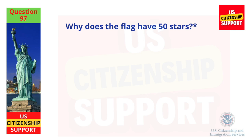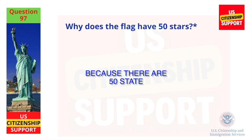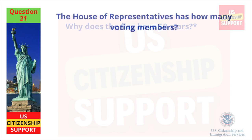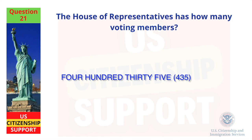Why does the flag have 50 stars? Because there are 50 states. The House of Representatives has how many voting members? 435.